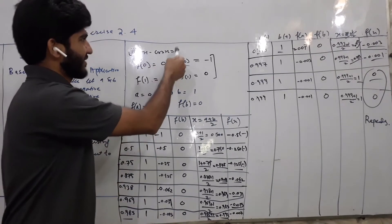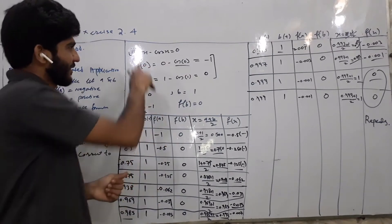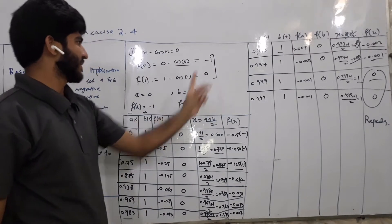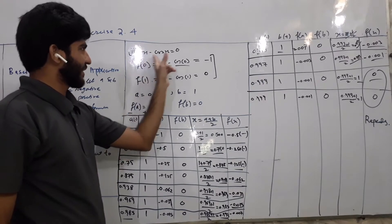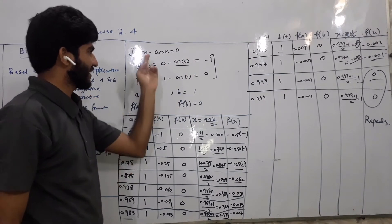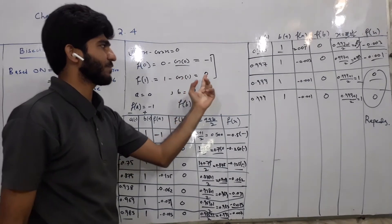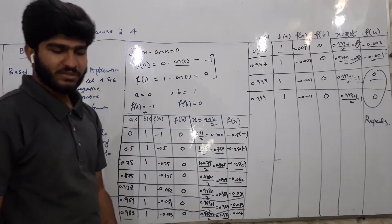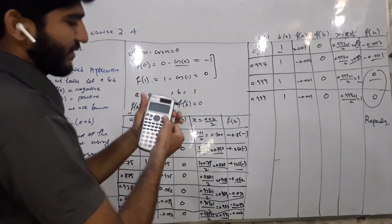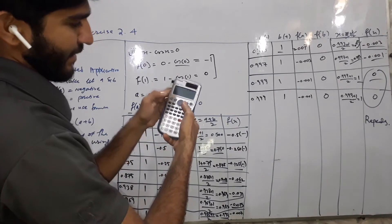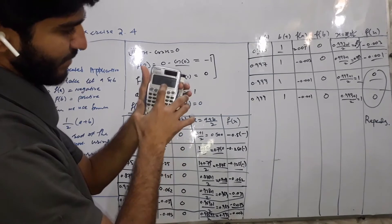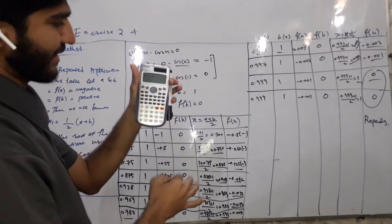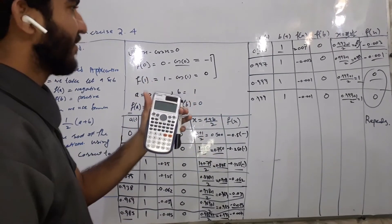تو یہاں پر equation ہے x minus cos x = 0. ہم نے function میں 0 put کیا: 0 minus cos(0) = minus 1. جب ہم 1 put کر رہے ہیں تو 1 minus cos(1) آ رہا ہے. اس کا جو answer آ رہا ہے وہ 0.000 ہے. Calculator کو 3 decimal places پہ fix کیا ہوا ہے — shift press کر کے setup press کریں، fix آتا ہے number 6 پہ، پھر 3 press کریں گے تو 3 decimal پہ fix ہو جائے گا.